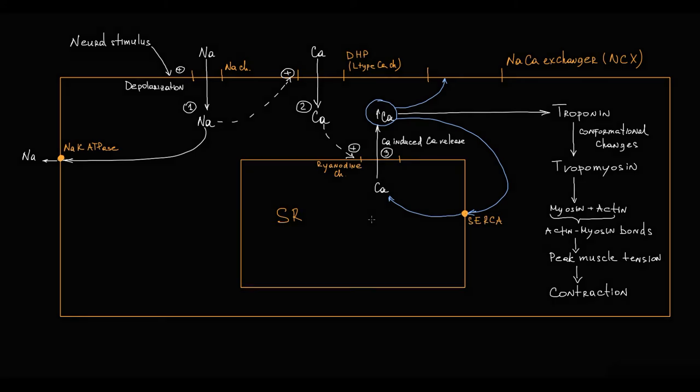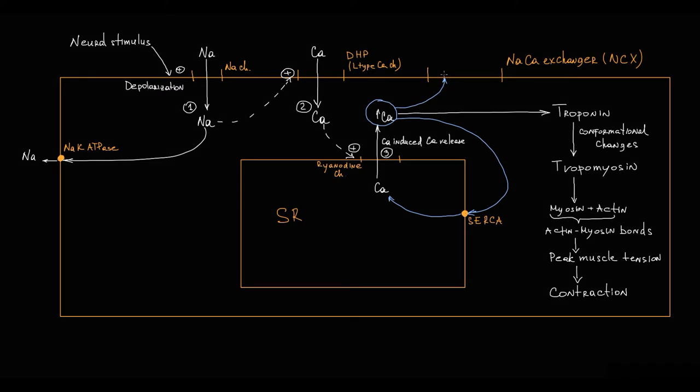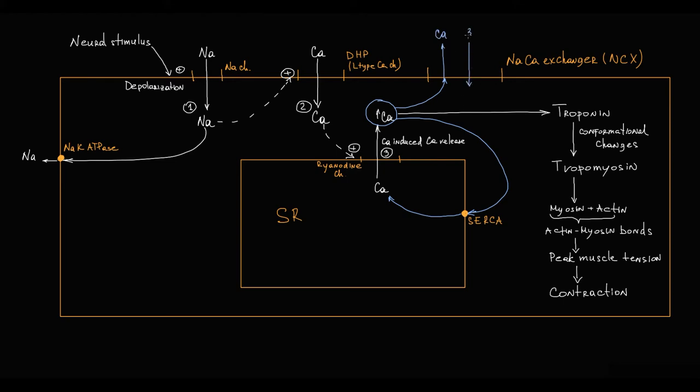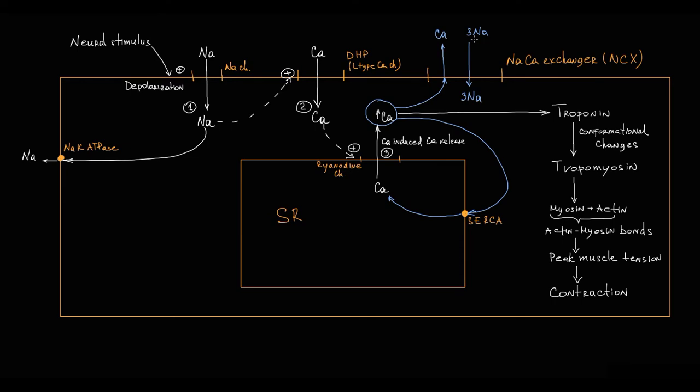The sodium-calcium exchanger is located on the cell membrane and exports one calcium molecule out of the cell in exchange for three sodium molecules entering the cell. Because calcium is an extracellular ion, its export is against the concentration gradient and would normally require energy. However, because this energy is provided by the simultaneous transport of three sodium molecules into the cell by concentration gradient, this exchanger does not require cellular ATP and functions independently.